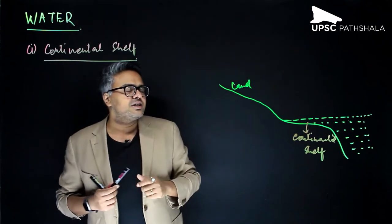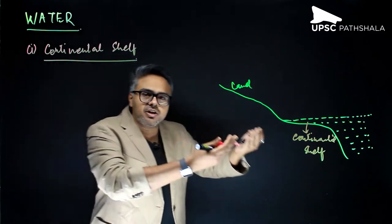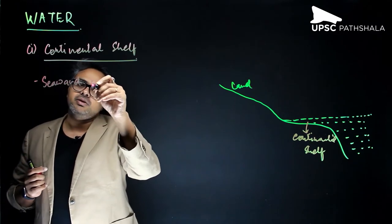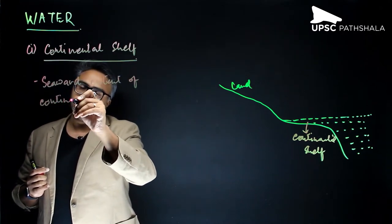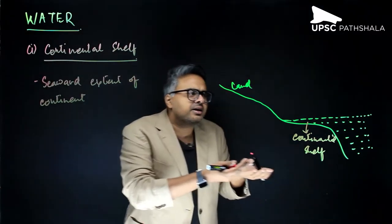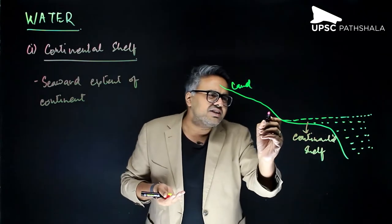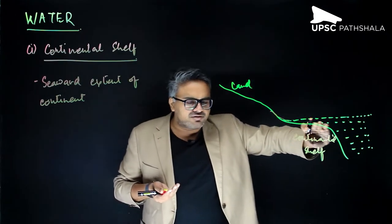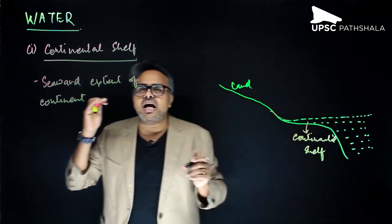What exactly is the continental shelf? Continental shelf is basically nothing but the seaward extension of the continent. It is like the continent itself is extending into some part below the sea as well. It is just a continuum — the extension of the land itself, the extension of the continent within the sea.